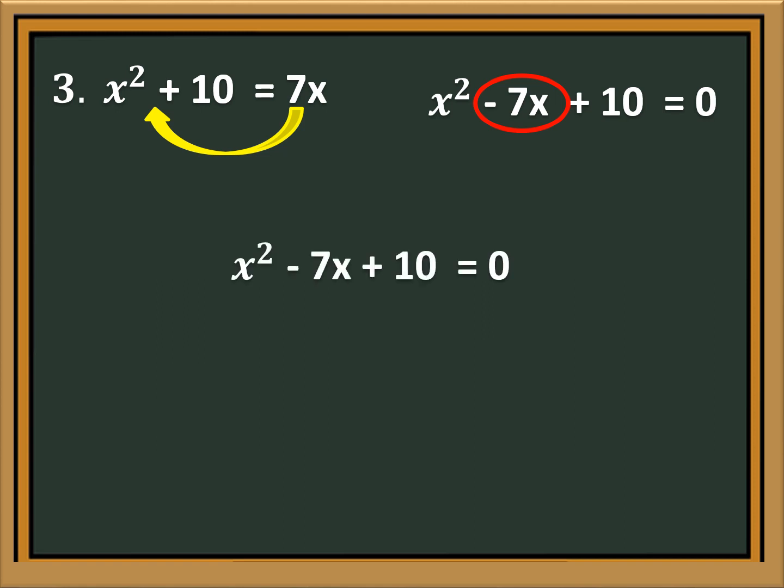Let us identify the value of A, B, and C. The value of A is 1, the value of B is negative 7, and the value of C is 10.